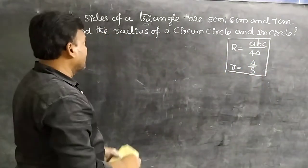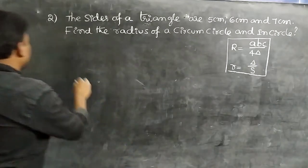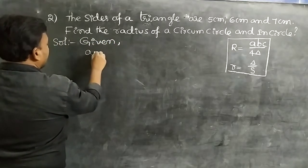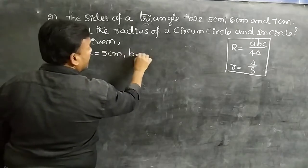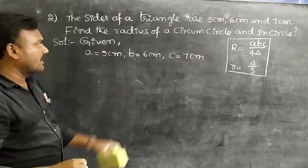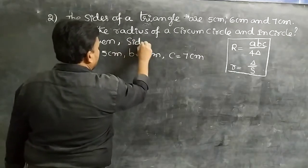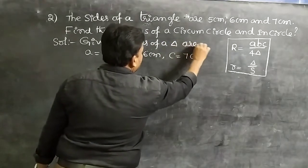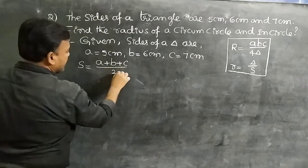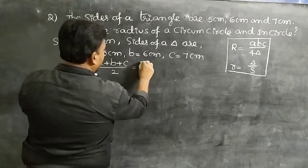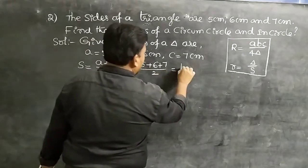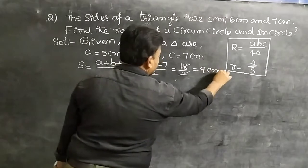The semi-perimeter s = (a + b + c) / 2 = (5 + 6 + 7) / 2 = 18 / 2 = 9 centimeters.